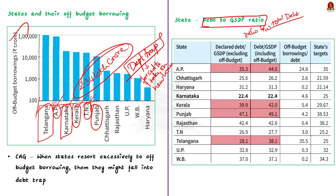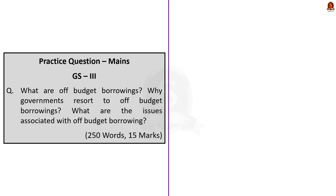Focus on the data for Andhra Pradesh. AP's debt-to-GSDP ratio is 35.3, against a target of 35 — seemingly not too bad. But the condition is actually very bad. Without accounting for off-budget borrowing, AP's debt-to-GSDP ratio is 35.3. But if we include off-budget borrowing, the ratio increases to 44. This is the cause of worry, and this is why the CAG has said off-budget borrowing might push the state into a debt trap. You can note all the important data from this article to substantiate your answers.